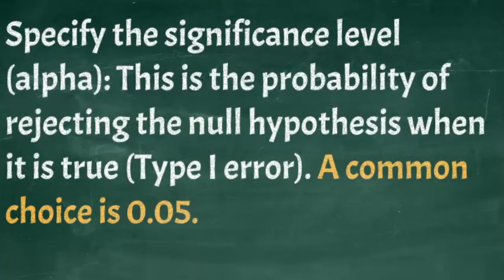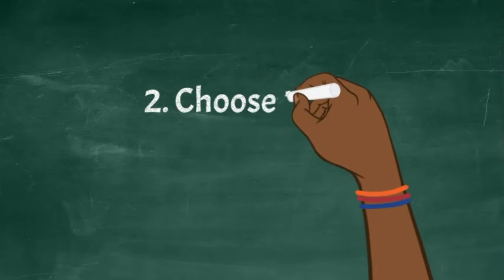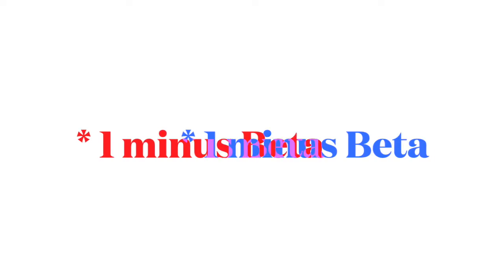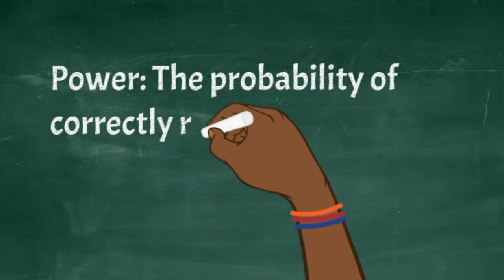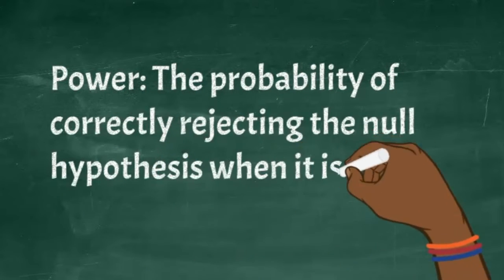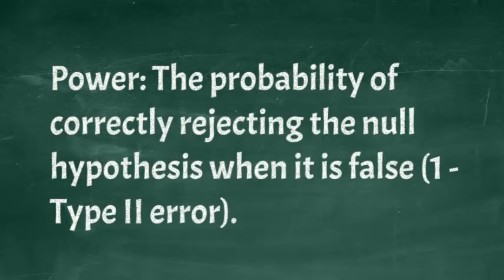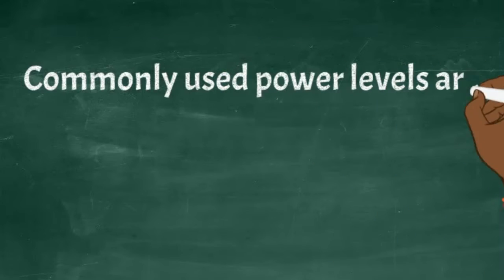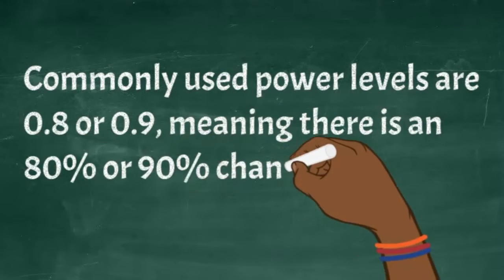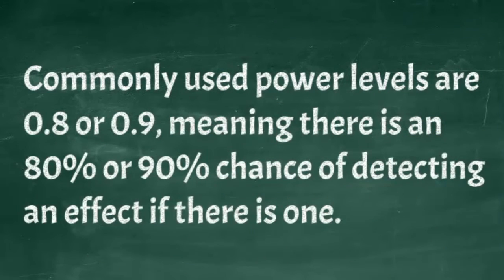The next step is to choose the desired power and the desired power is from 1 to beta. So the power is looking at the probability of correctly rejecting the null hypothesis when it is false. So your Type II error. Commonly used power levels are 0.8 or 0.9, meaning there is an 80% or 90% chance of detecting an effect if it is there.